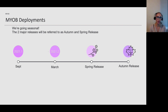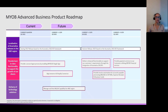Before jumping into the roadmap, you'll notice I've been saying autumn and spring release — we're going seasonal, just changing the numbering. We have two releases a year and they'll be called Spring or Autumn. From an Advanced Business product roadmap perspective, we have two releases this year as noted. I'll provide an update on what has been done and what is our focus and what's next.